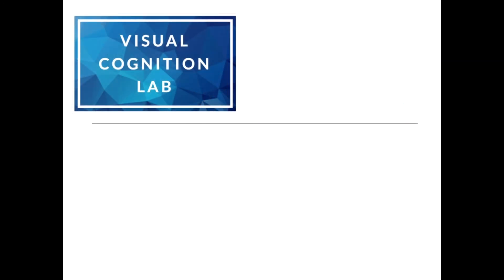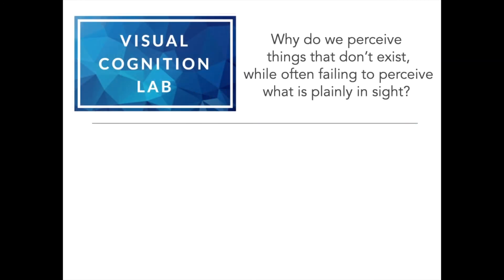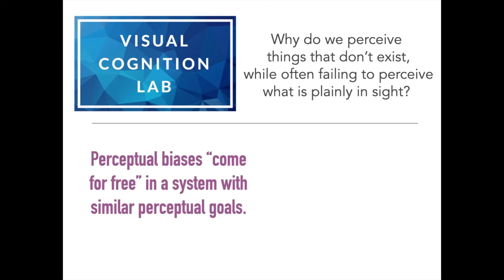These two studies that I've talked about directly address a question that my lab is most interested in. Why do we perceive things that don't exist, while often failing to perceive what is plainly in sight? First of all, I've shown that perceptual biases may come for free in a system with similar perceptual goals. This is regardless of what form the system actually takes, be it a deep neural network or a human. Second, that the representational similarity in these networks can be very useful in predicting when failures of awareness occur.